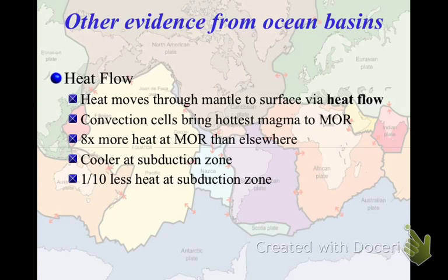Other evidence includes heat flow. We know that heat moves through the mantle to the surface, and we can measure the temperature of different parts of the ocean floor. The mid-ocean ridges tend to be the hottest — the convection cells bring magma there, and they are eight times hotter at the mid-ocean ridge than anywhere else. It is coolest at the subduction zone, with heat dissipating as you move across. Hot spots are an exception to this, and we'll get to them eventually.